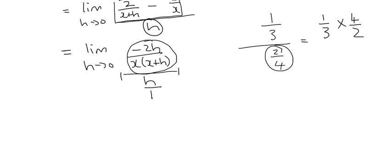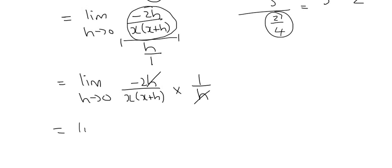We'll use the same approach: lim as h goes to 0 of [-2h/x(x+h)] times (1/h). Before multiplying across, realize these two h's can cancel. We have lim as h goes to 0—keep writing this—and at the top we're left with -2, at the bottom with x(x+h).